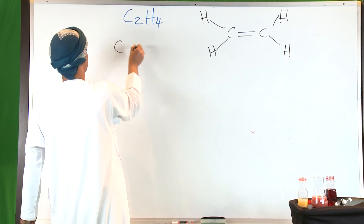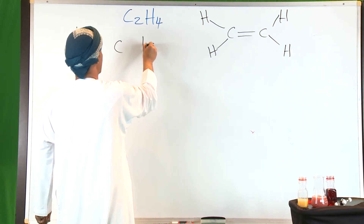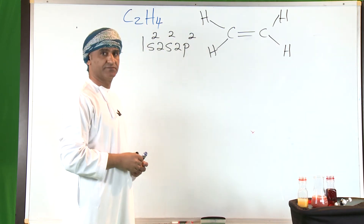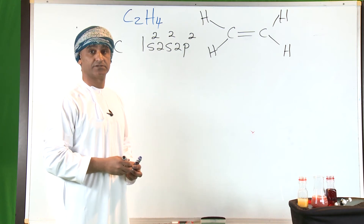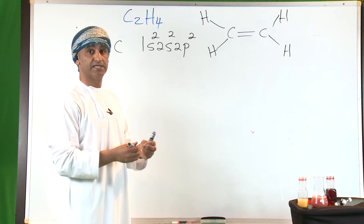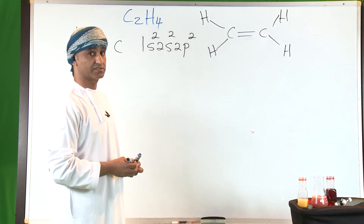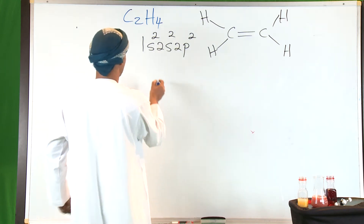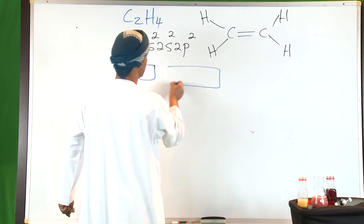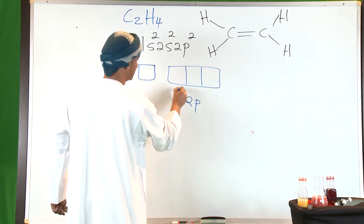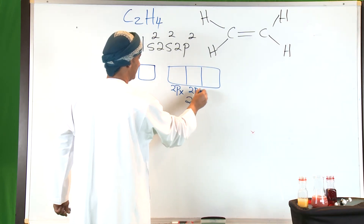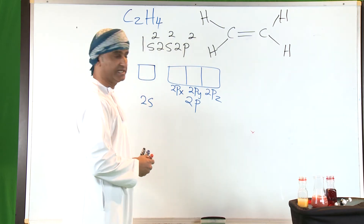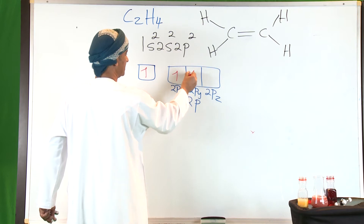Let's recall the electronic configuration of carbon. Carbon has an atomic number of six; the electronic configuration is 1s²2s²2p². Just as we practiced in the case of methane, let's distribute the valence electrons — electrons located in the outermost shell. There are four valence electrons for carbon: the 2s orbital and the three 2p orbitals — 2px, 2py, and 2pz — each with one unpaired electron.